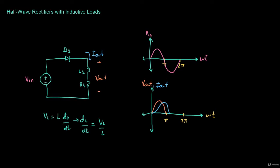So for the output, remember that a diode conducts when it's forward biased or when there's current flowing through it. The current flowing through it has to be zero for it to turn off. So if we look at the output voltage at pi, there's still current flowing through the circuit. The diode is not going to turn off until the current goes to zero, so the output voltage then slightly goes into the negative portion.